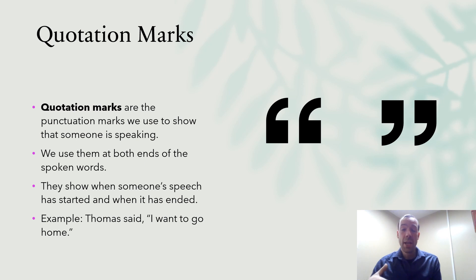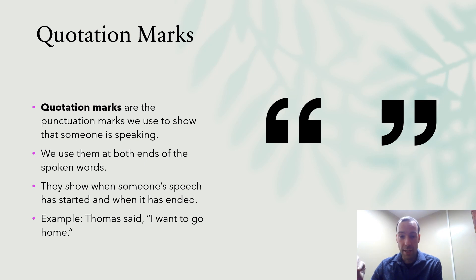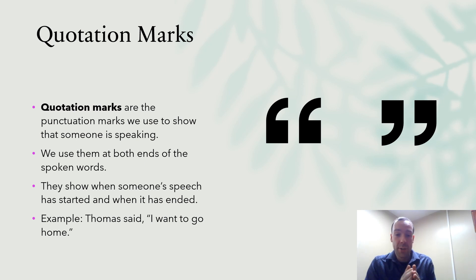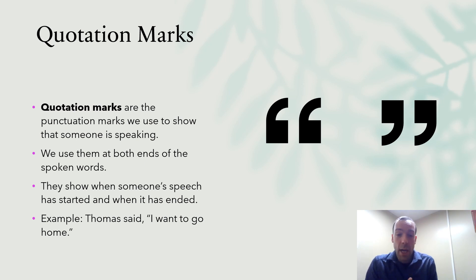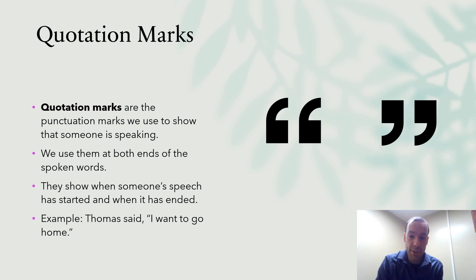It's very important when we're writing dialogue that we include the correct punctuation, and the key punctuation is the quotation mark. These are two little marks in the air — we use them at the start and at the end of the dialogue for each spoken line, showing when someone's speech has started and when it has ended. For example, in the sentence 'Thomas said I want to go home,' the quotation marks appear before 'I' and after 'home,' and the period comes inside the quotation marks at the end.